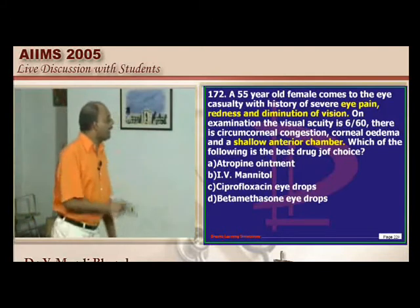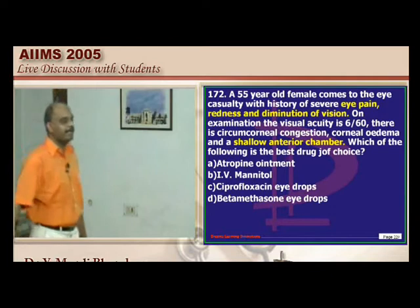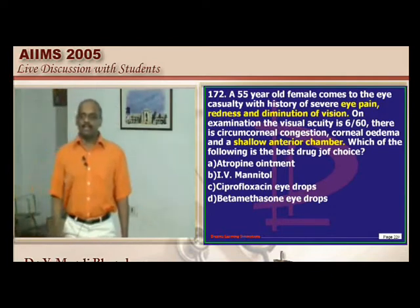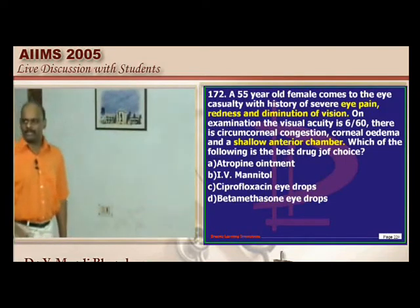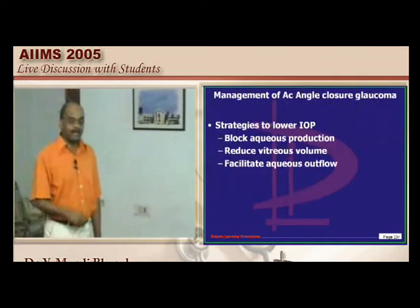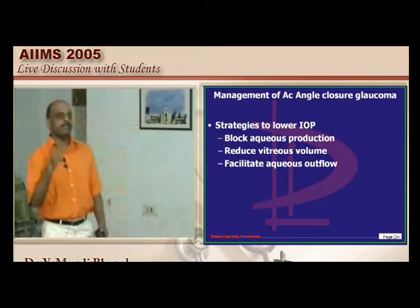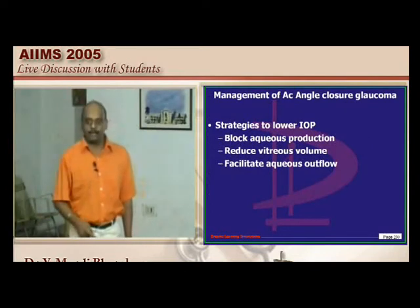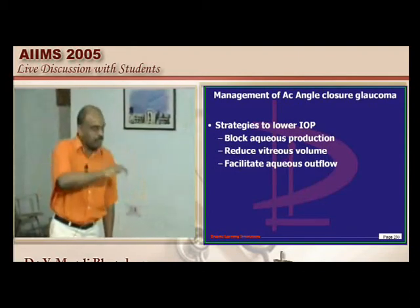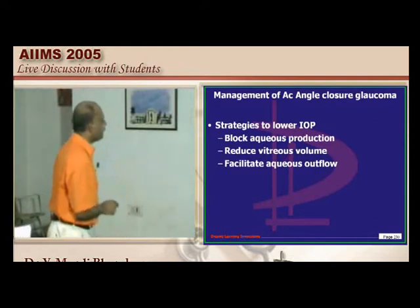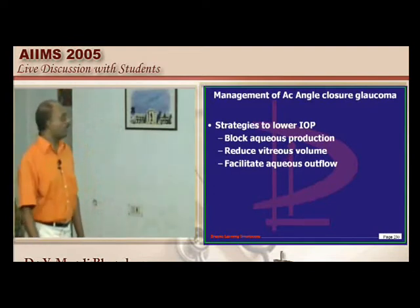A 55-year-old female with eye pain, redness, diminution of vision, and shallow anterior chamber has closed-angle (narrow-angle) glaucoma. The strategy is to lower intraocular pressure first, then treat with surgery, and prophylactically perform iridectomy on the other eye. To block aqueous production: beta antagonist like timolol, carbonic anhydrase inhibitor like acetazolamide, or apraclonidine. To reduce vitreous volume: glycerol, isosorbide, or mannitol.